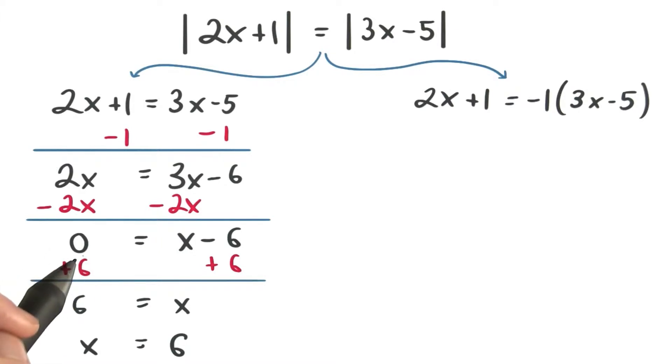So if this left side is 0, that must mean x would have to equal positive 6, since 6 minus 6 does make 0. We also see that by just adding 6 to both sides. So 6 is equal to x or x is equal to 6.